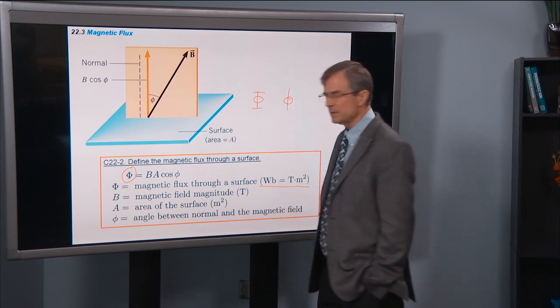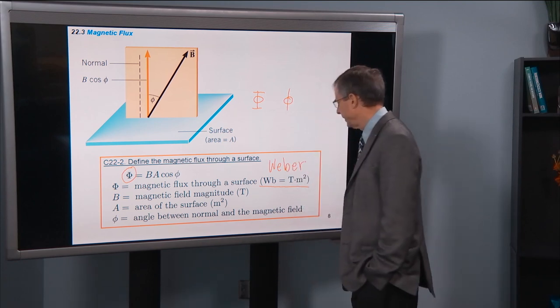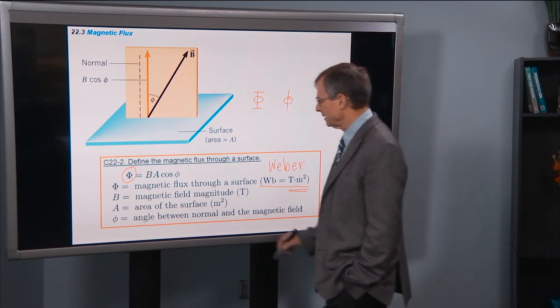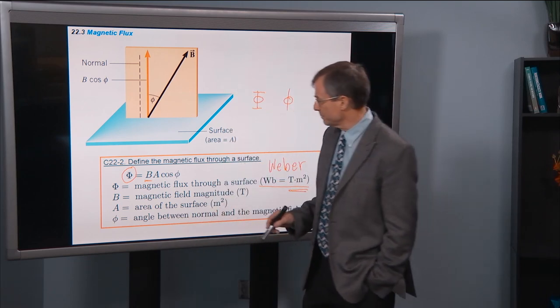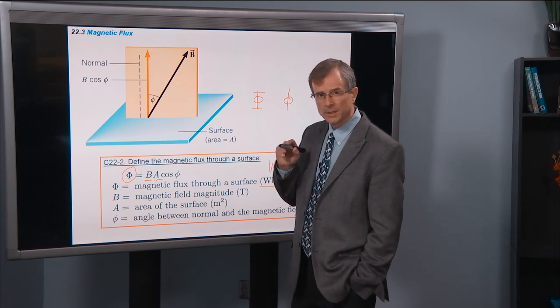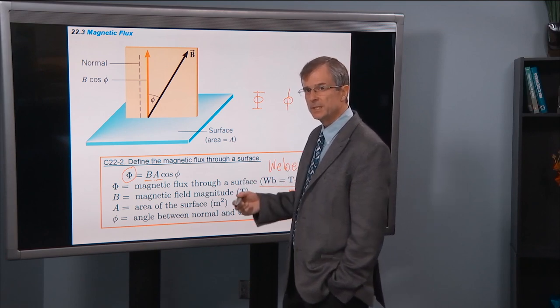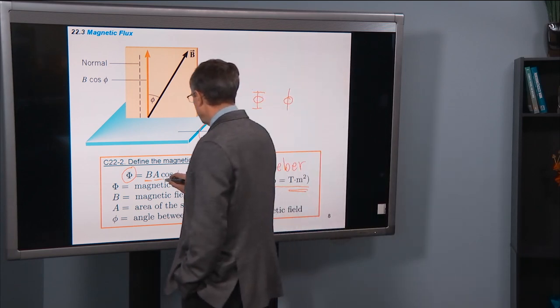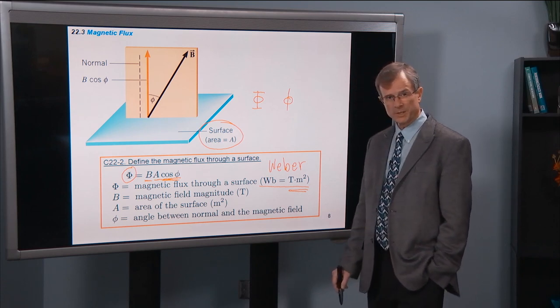It's measured in units of so-called Webers, W-E-B-E-R. And that unit is a tesla times a meter squared. The magnetic flux is defined as the magnitude of the magnetic field, B, times the area of a surface. Whatever surface you're interested in finding the flux through, it's the area of that surface. And then finally, the cosine of the angle between the normal to that surface.